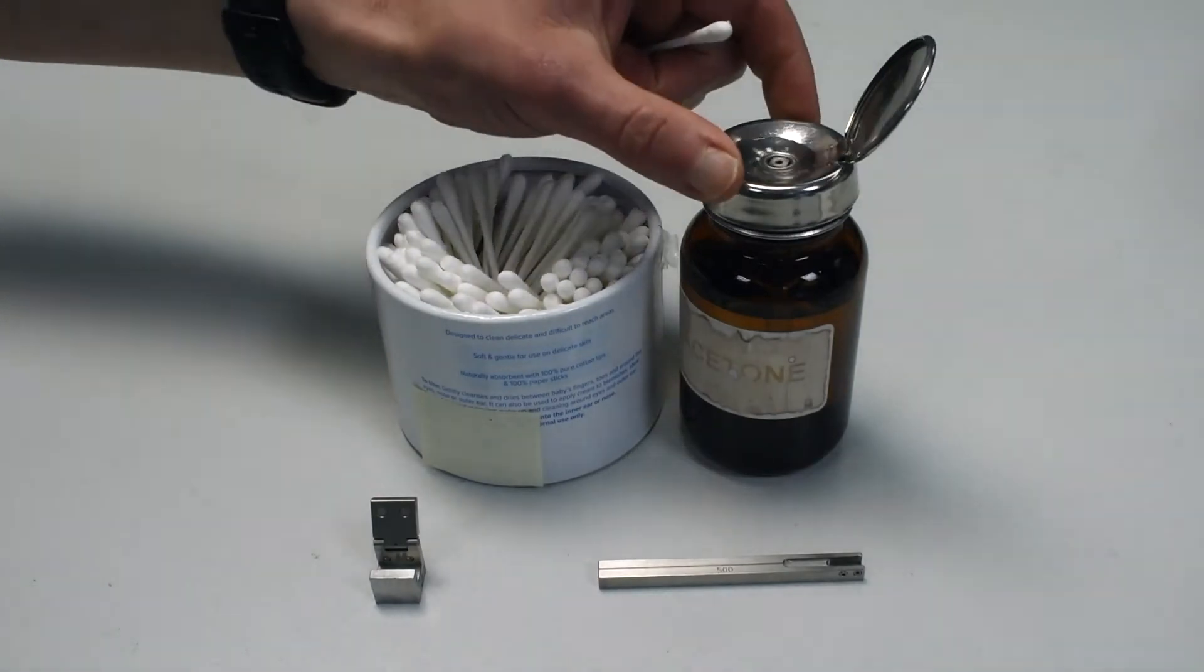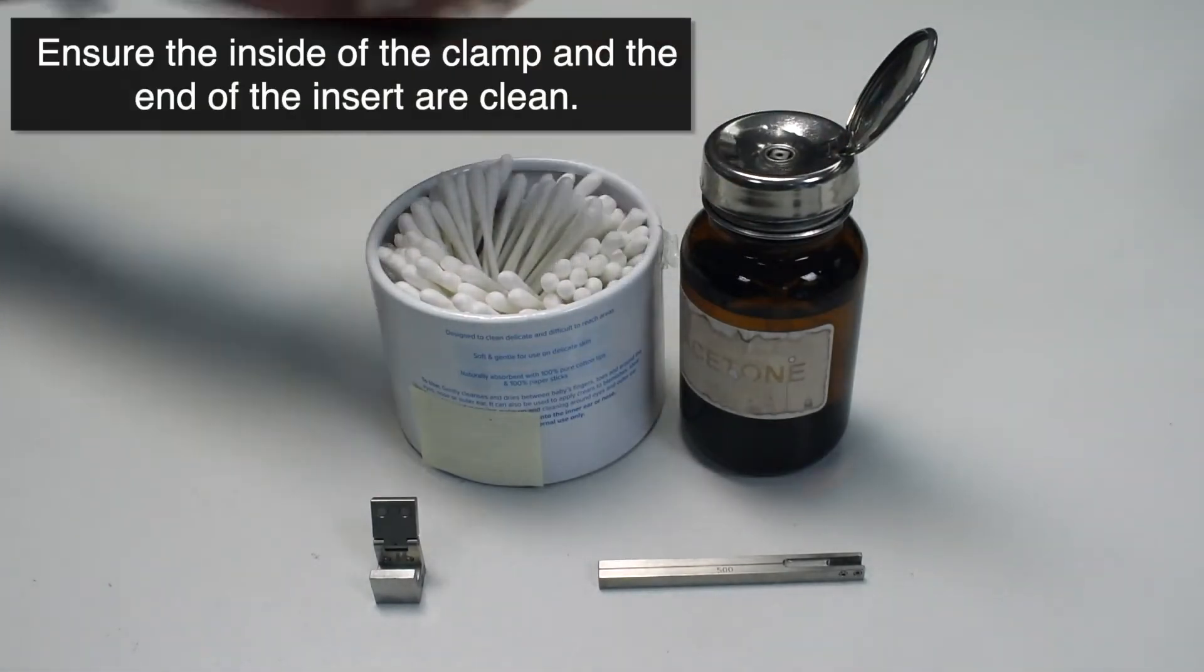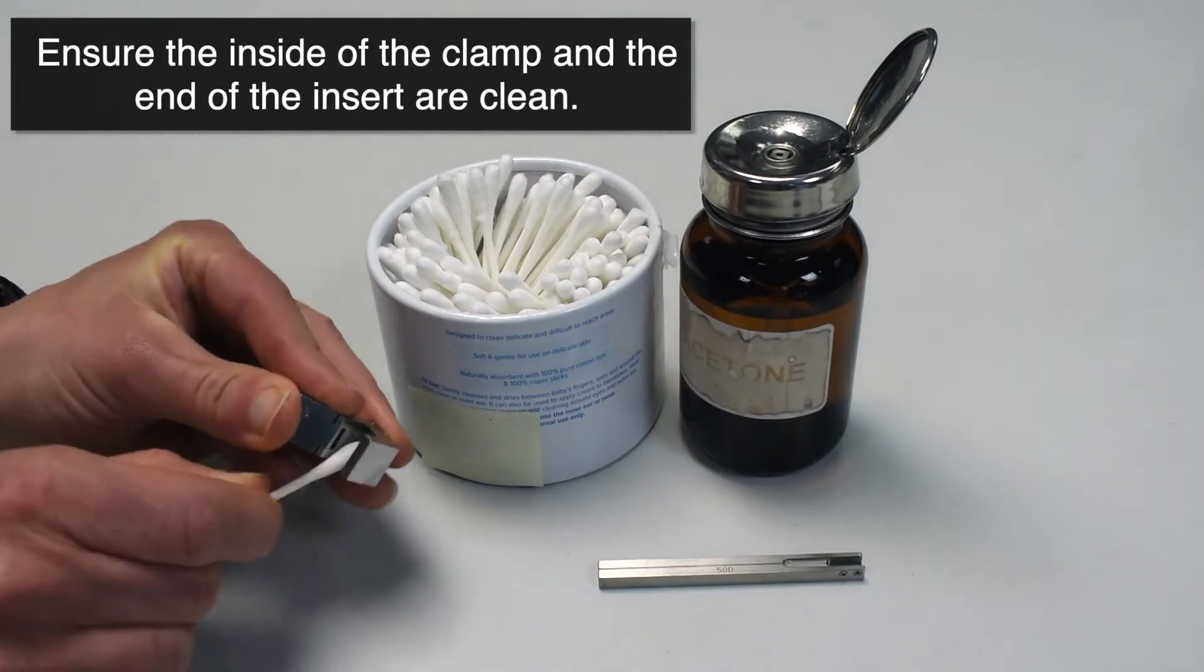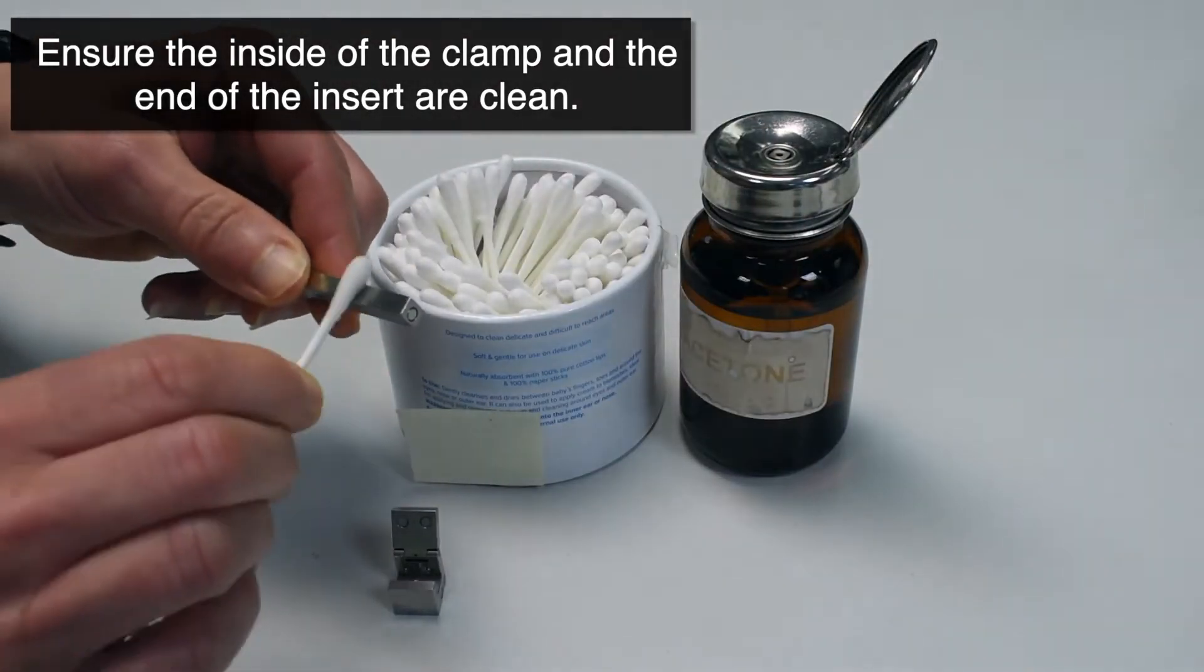Next, using a cotton bud and appropriate solvent such as IPA or acetone, clean the slot in the transfer clamp and the surfaces of the back edge of the transfer insert.